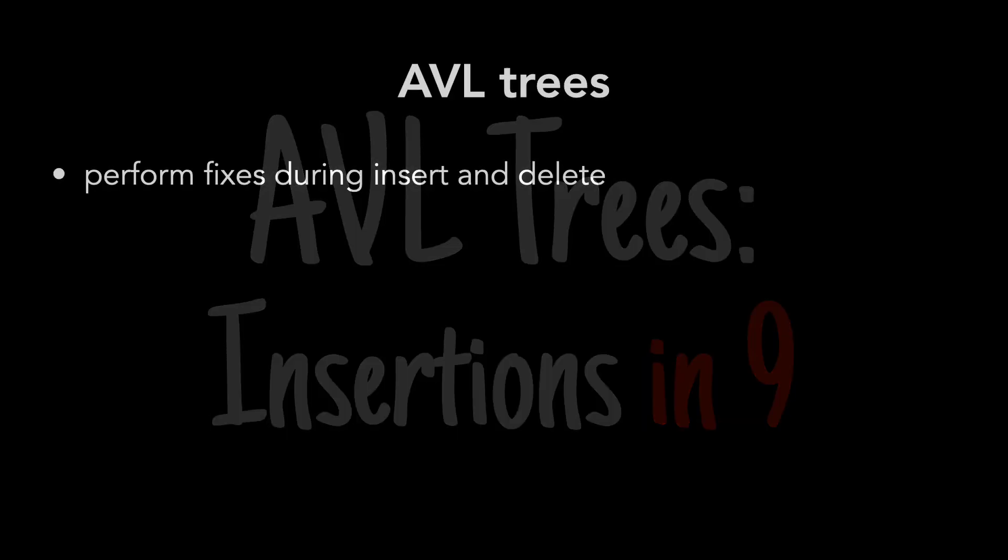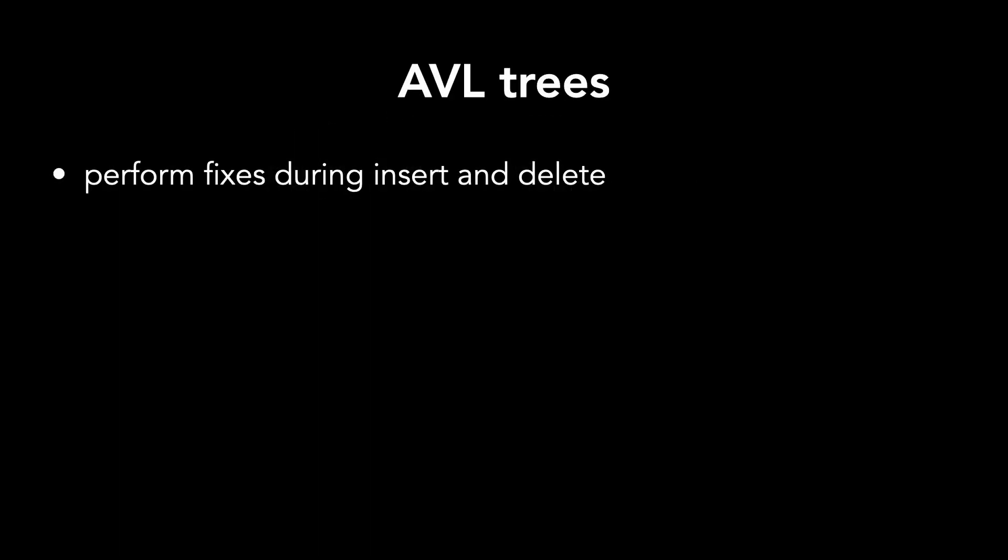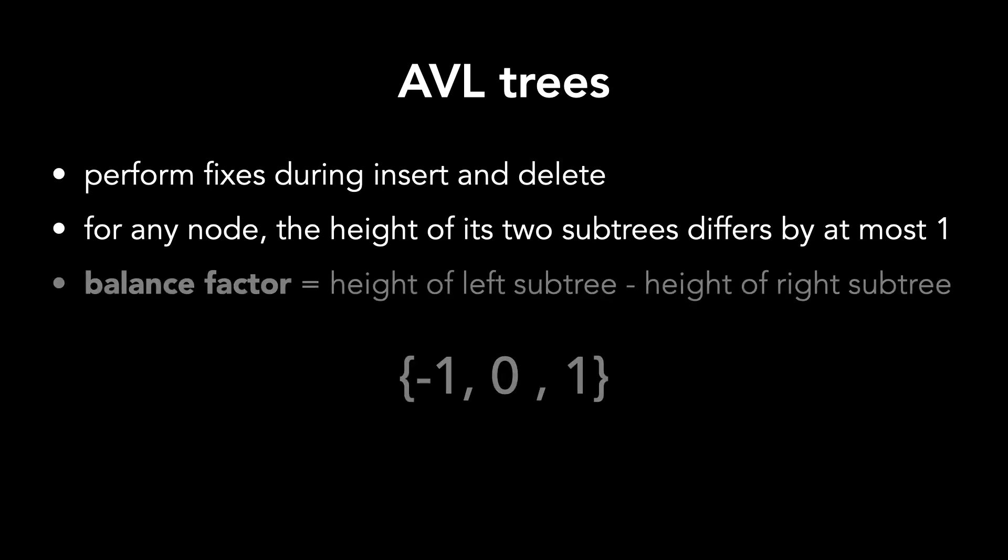Remember that when inserting and deleting nodes from an AVL tree, we may need to perform fixes in order to preserve the main property of AVL trees. That is, for any node, the height of its two subtrees differs by at most one. This is called the balance factor and has valid values of negative 1, 0, and 1.